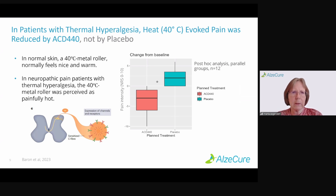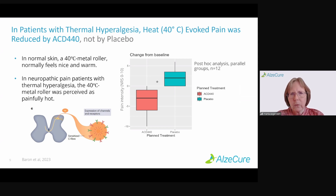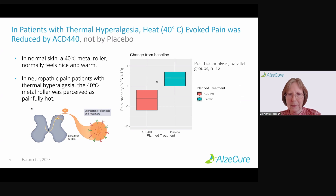In the patients who demonstrated thermal hyperalgesia, 40 degrees centigrade of heat — normally you'd feel that as lukewarm, like a normal hot shower — evoked pain in these patients. That pain was reduced by about 50% in patients when they received ACD440, but not when receiving placebo. As you can see on the cartoon, placebo patients remained with the initial pain intensity, while patients receiving ACD440 had a reduction in pain of about three steps on the zero-to-10 scale, which is fairly clinically significant.